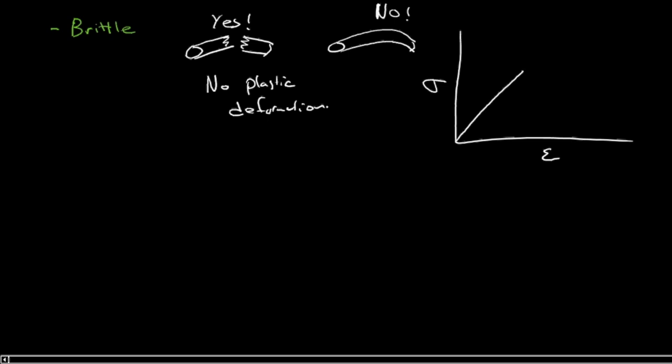A ceramic material would typically have a linear elastic region, and then it would fracture. So there's the point of fracture. But you'll notice there was no plastic deformation. We can still define the slope here as the Young's modulus.